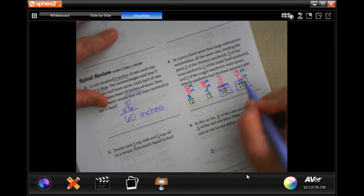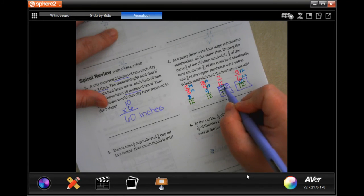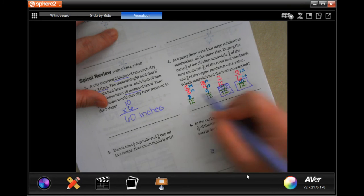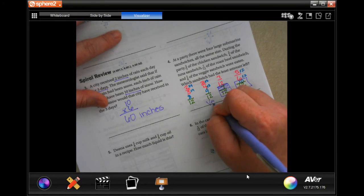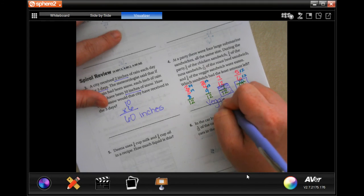12 minus 10 is 2, 12 minus 7 is 5, 3, 4, so this one. So, veggie would be your answer.